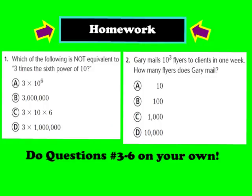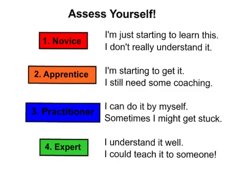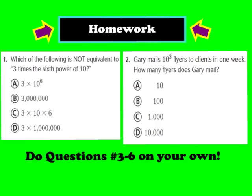For your homework assignment tonight, please complete questions 1 and 2, as well as numbers 3 through 6 in your GoMath workbook, found on page 10. Somewhere on your homework page, let me know if you feel like you're a 1 (novice), a 2 (apprentice), a 3 (practitioner), or a 4 (expert). I hope you guys have a great evening, and I look forward to seeing you in class tomorrow. Bye!